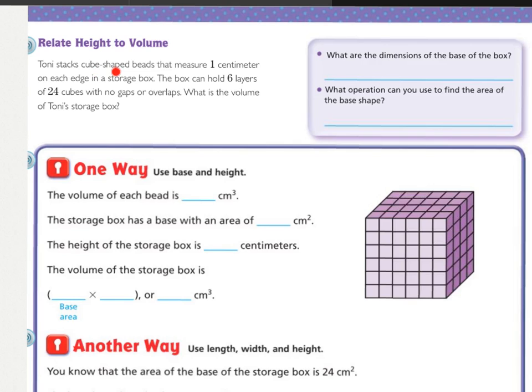Tony stacks cube-shaped beads that measure 1 cm on each edge in a storage box. The box can hold 6 layers of 24 cubes with no gaps or overlaps. What is the volume of Tony's storage box? You're being asked to find the volume, and right over here it says what are the dimensions of the base of the box? We know that it's 6 layers of 24 cubes, so that bottom layer has 24 cubes. There's a few different dimensions it could be. Really any multiplication factor pair that add up to 24 could be the dimensions. I'm going to use 4 cm and 6 cm, but if you used 8 and 3 or 12 and 2, you're going to end up with the same volume.